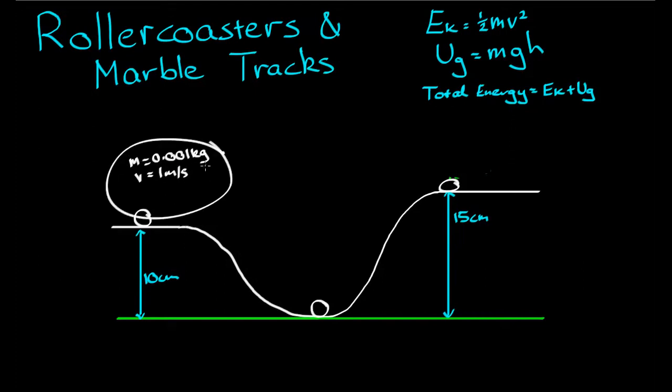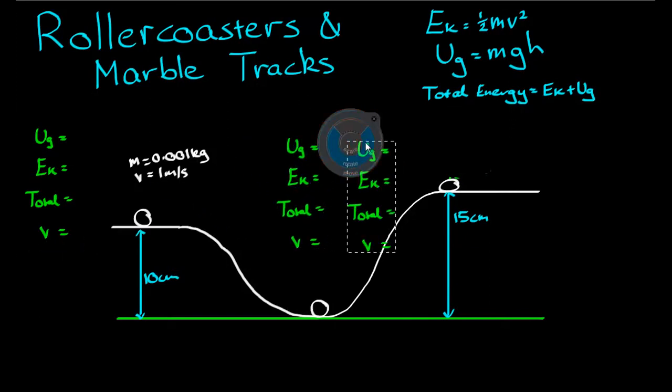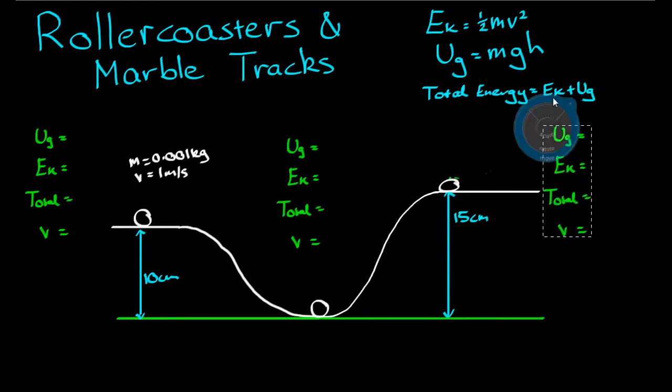From this information here, I want to attain three values: gravitational potential energy, kinetic energy, and total energy, which is the sum of those two. And I want to attain, actually we'll do a third value, velocity. I want to attain those four unknown values for all three instances in time.